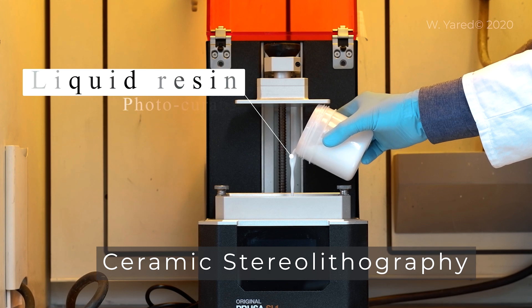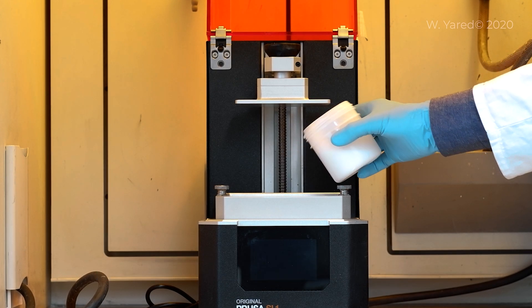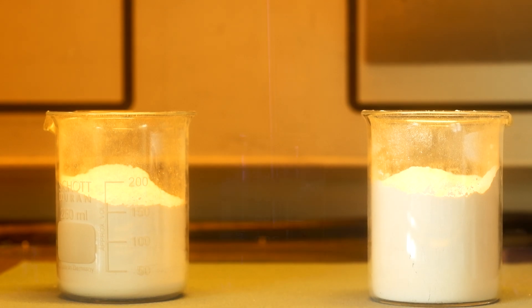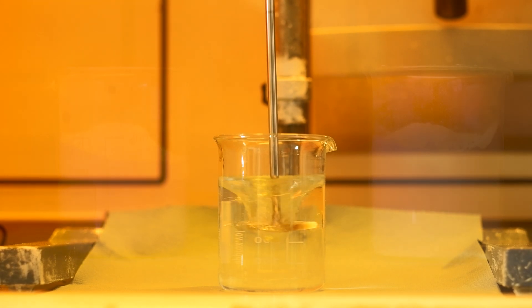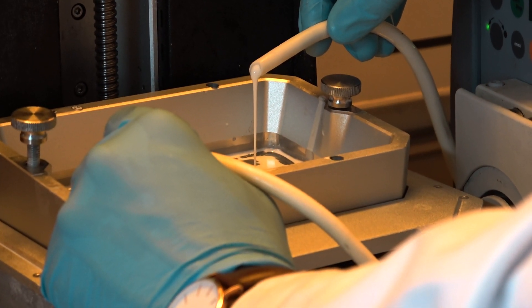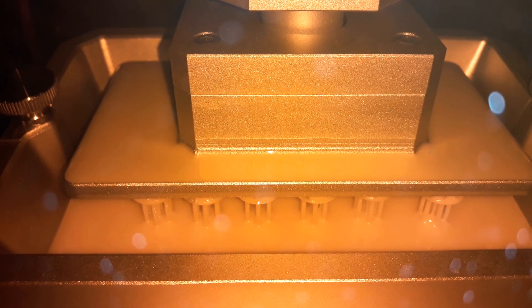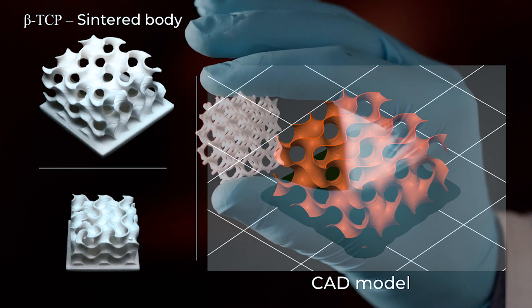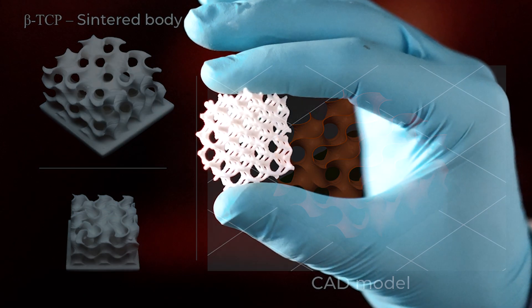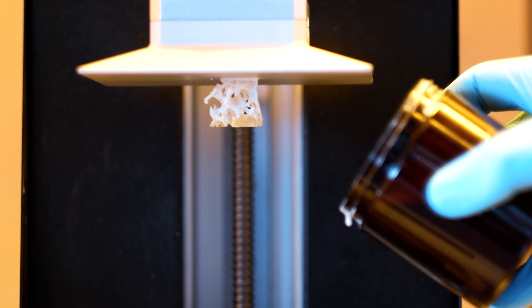Stereolithography sounds like a complex name, but it's actually quite simple. It was one of the first additive manufacturing processes ever invented and remains widely used today. It's the 3D printing technology that uses the process of layer-by-layer photopolymerization to create three-dimensional objects from digital models. Photopolymerization is a chemical process in which liquid monomers or polymers are converted into solid materials using light energy.